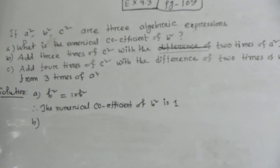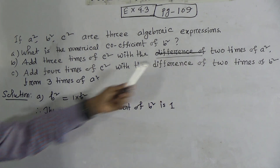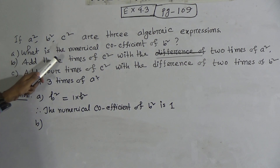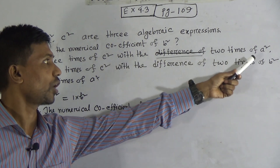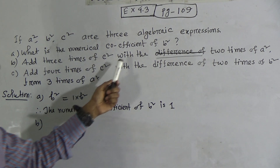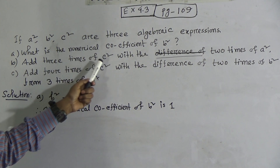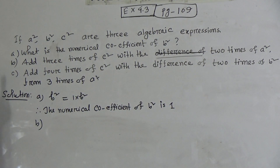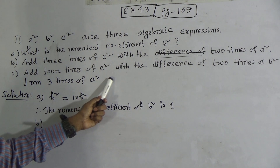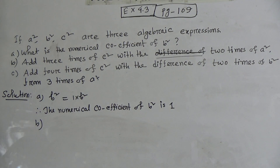Let's start the class. At first we read the question: if A square, B square, C square are 3 algebraic expressions — Part A: what is the numerical coefficient of B square? Part B: add 3 times of C square with the difference of 2 times of A square. Students, remember, there is a written mistake in your book — the correct form is: add 3 times of C square with the 2 times of A square. Part C: add 4 times of C square with the difference of 2 times of B square from 3 times of A square.